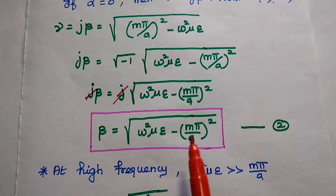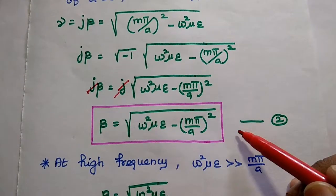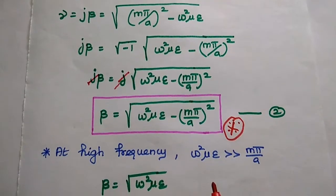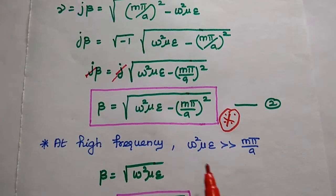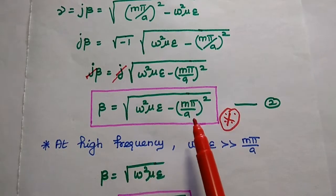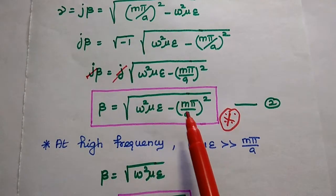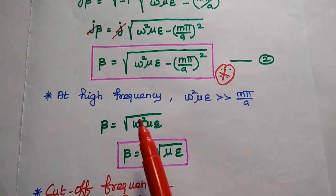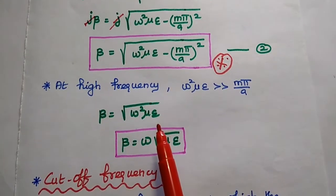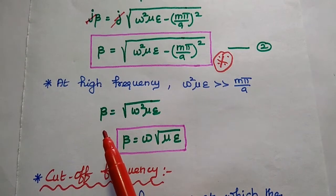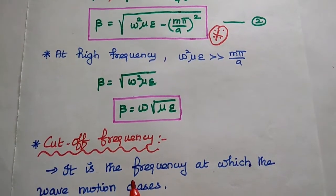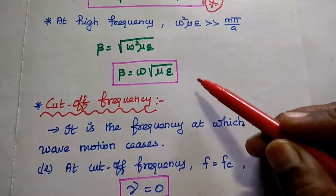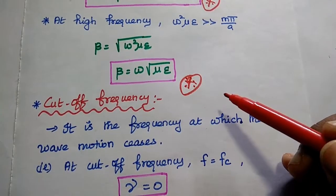So β = √(ω²με − (mπ/a)²). This is the second equation representing the phase shift constant. At high frequency, the ω²με term is far greater than the second term, so we can neglect it. We can write β = √(ω²με), which simplifies to β = ω√(με). This is the phase shift constant at very high frequency.